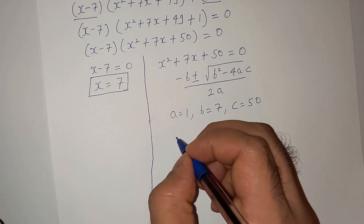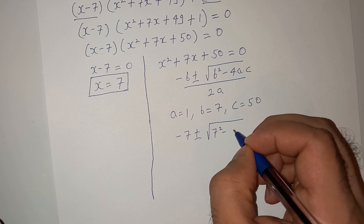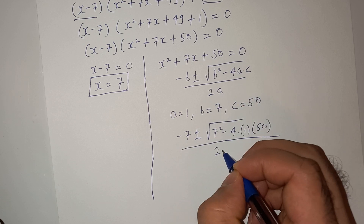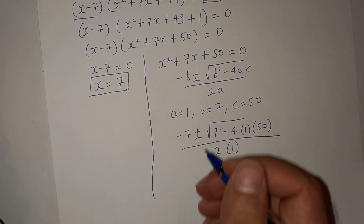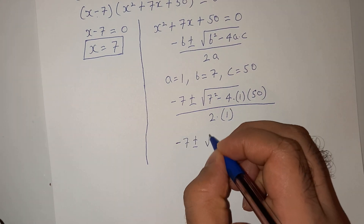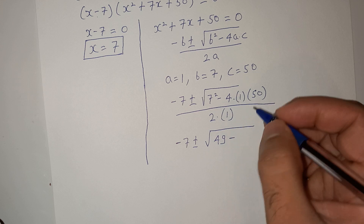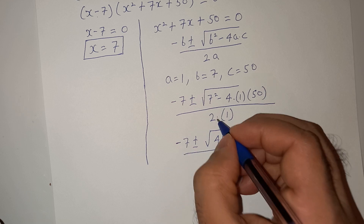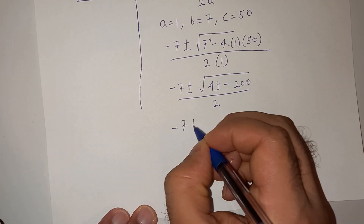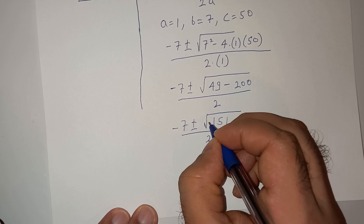So let's solve this. This will be minus 7 plus or minus root(b² minus 4ac) divided by 2a. So that is minus 7 plus or minus root(7² minus 4×1×50) divided by 2×1. This gives minus 7 plus or minus root(49 minus 200) divided by 2, which is minus 7 plus or minus root(minus 151) divided by 2.